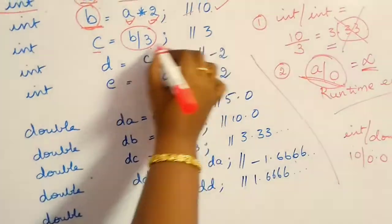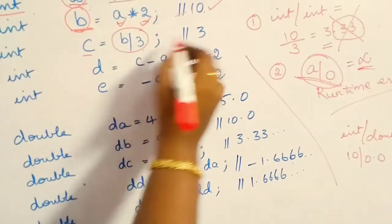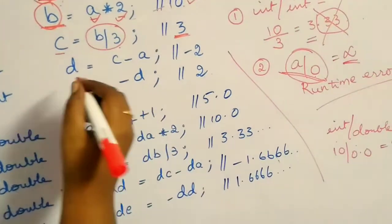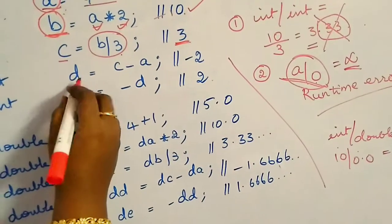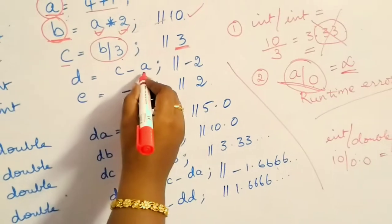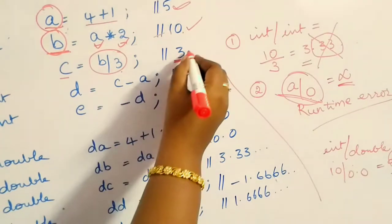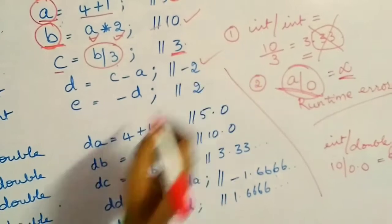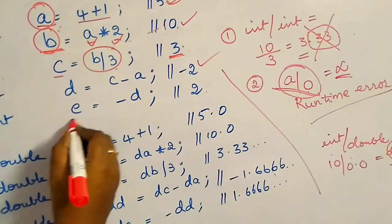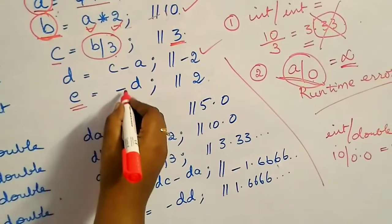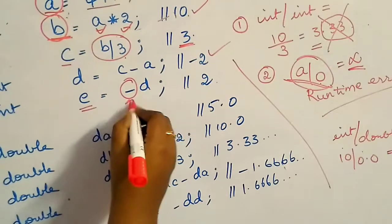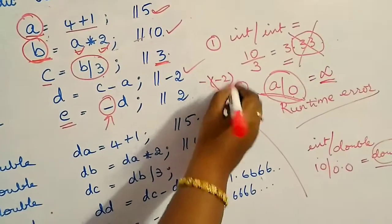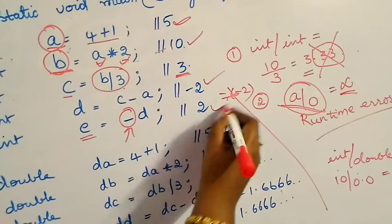Continuing the example: c is 3 because the fractional part is truncated. Then d is equal to c minus a, which is 3 minus 5 equal to minus 2. Then e is equal to minus d — applying a unary minus over here — so minus of minus 2 becomes plus 2.